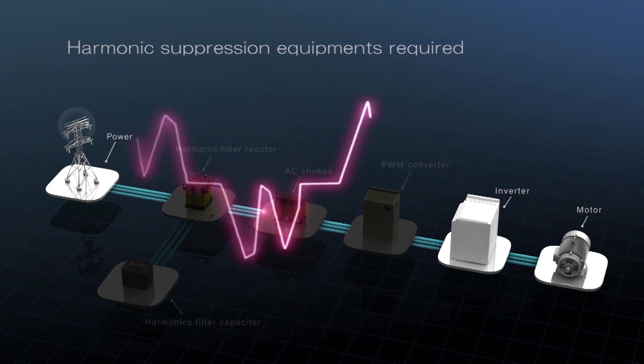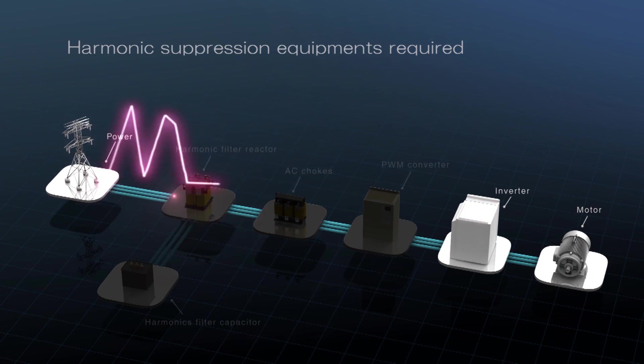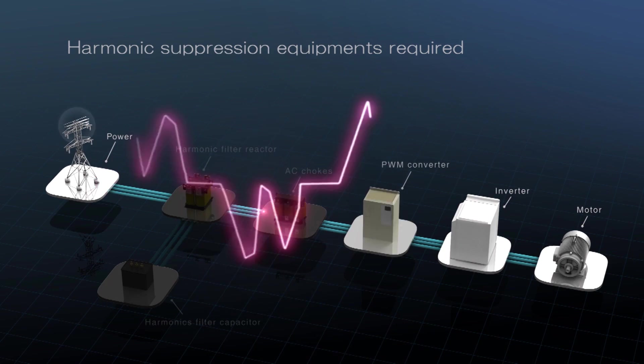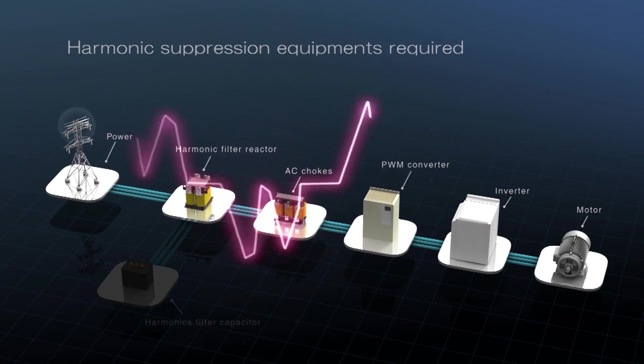Historically, solving the problem of harmonic distortion and regenerative energy has required the addition of extra components such as PWM converters, AC chokes, harmonics filters, and capacitors.